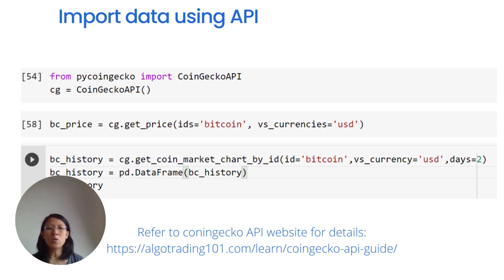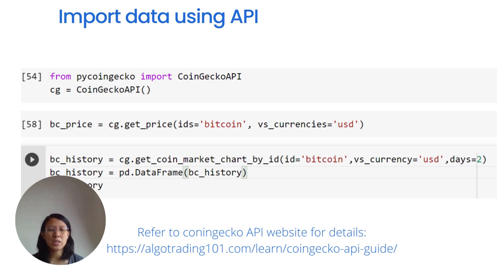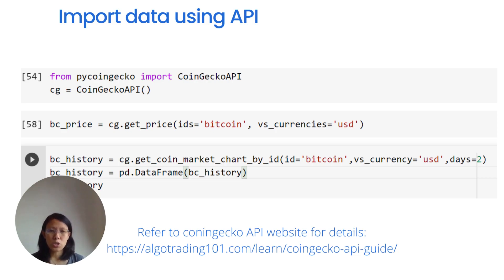There are many APIs that can be used. You use the first object to initialize the market. The API bracket will initialize the market. The API is actually a method that gives you information — for example, currency and U.S. currency data. You can get market history using the get_market_chart_by_id method.